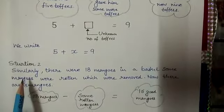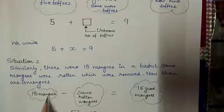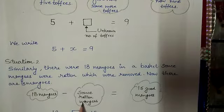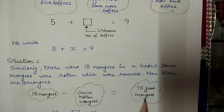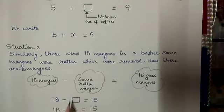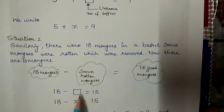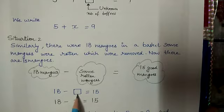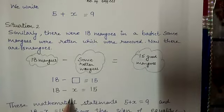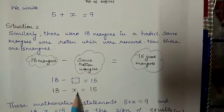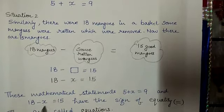Now, look at another situation. There are 18 mangoes in a basket and some of these mangoes were rotten, which were removed. Now, there are 15 good mangoes. How can I write this expression in the form of statement? 18 minus some rotten mangoes, unknown value that I don't know, is equal to 15. Let that unknown number is equal to x. When we write these mathematical statements, 5 plus x equals 9, 18 minus x is equal to 15,